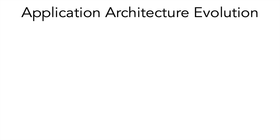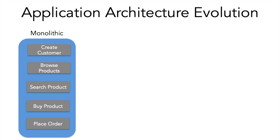Initially we had something called monolithic applications — a single application with all features and components embedded in it. In this diagram, the outside blue box represents a single application or single piece of code, and each gray square box represents a feature or functionality. For a retail application, those features might include creating customers, browsing products, searching products, buying products, and placing orders. In monolithic applications, a single program would have all these features embedded, making programs really big and very hard to maintain, control, and enhance.